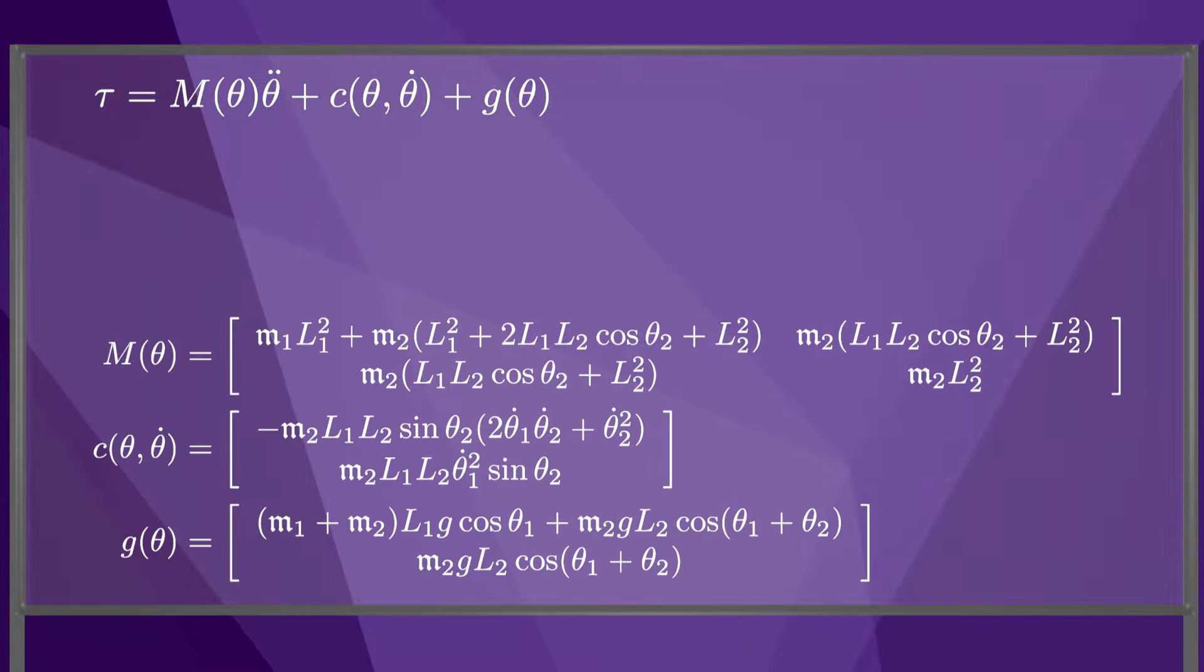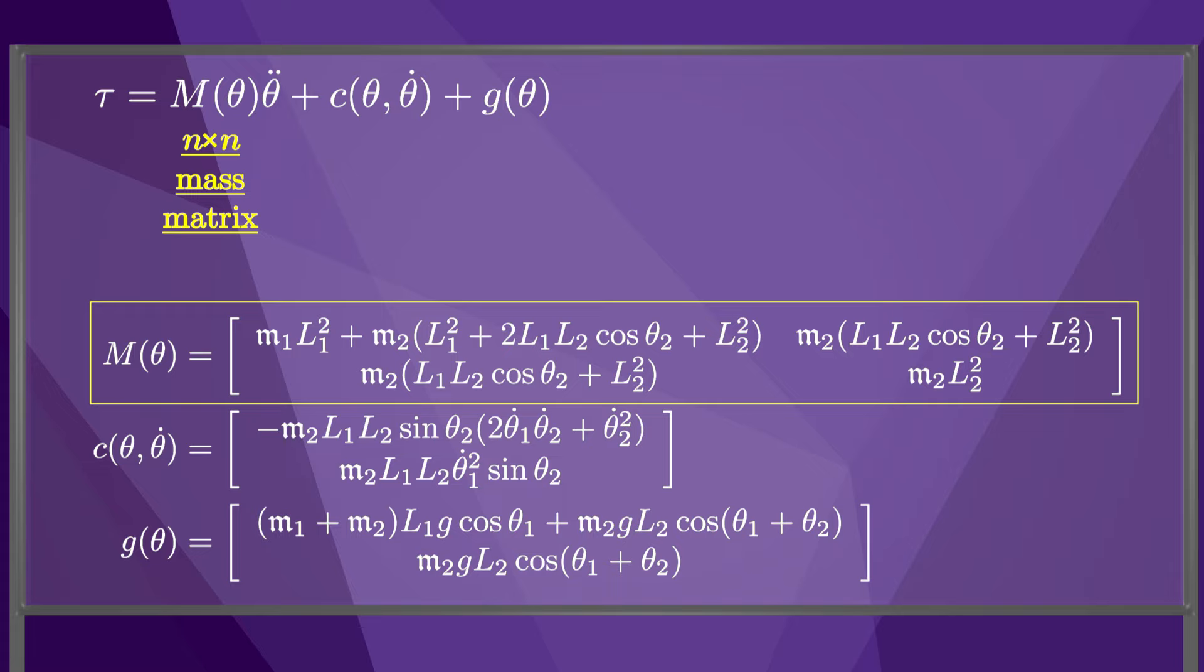With this observation, we can write the vector equation of motion in this form: τ equals M(θ) times θ̈ plus c(θ,θ̇) plus g(θ), where the matrix M and the vectors c and g are shown here. We call M the mass matrix. For a robot with n joints, this matrix is n by n, and for our 2R example, it is 2 by 2.